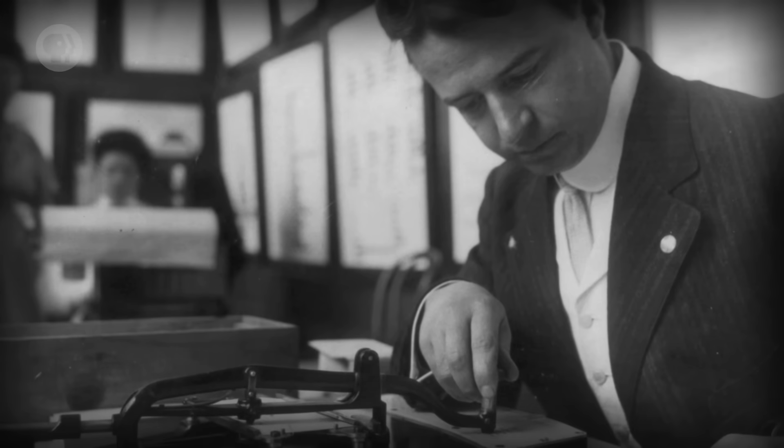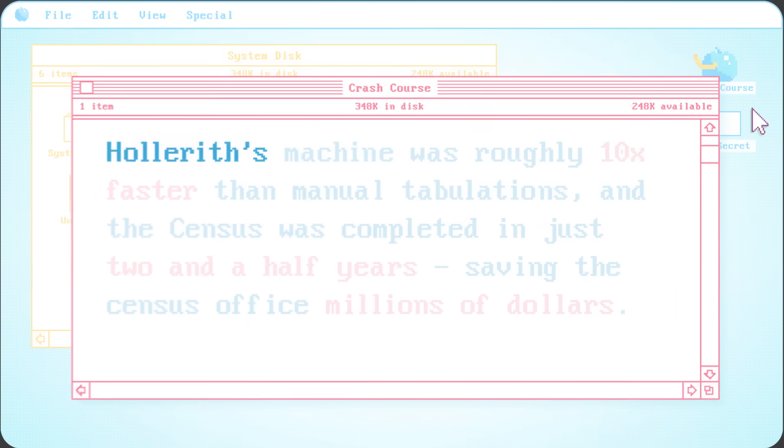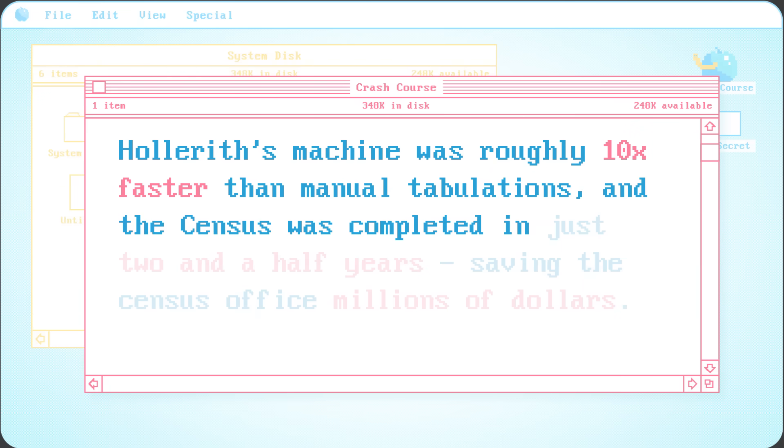If a spot was punched out, the pin would pass through the hole in the paper and into a little vial of mercury, which completed the circuit. This now-completed circuit powered an electric motor, which turned a gear to add one – in this case, to the married total. Hollerith's machine was roughly 10 times faster than manual tabulations, and the census was completed in just two and a half years, saving the census office millions of dollars.